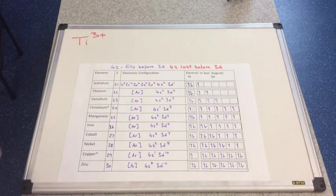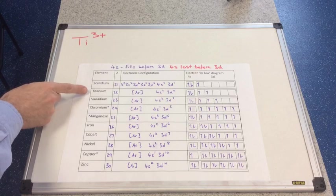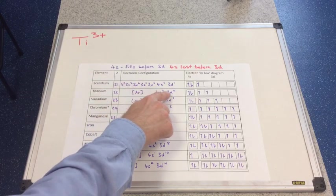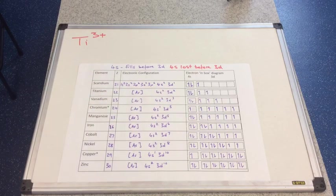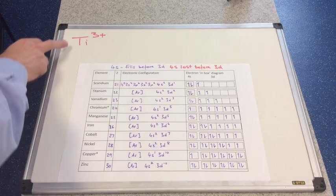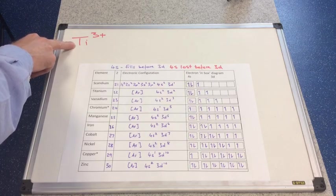So we'll have a look at a few examples now then. So the first one I've written on the board there is the titanium 3+ ion. So there's titanium, the atom. And it's got an argon 4s2, 3d2 configuration. So if it forms a 3+ ion, then it needs to lose 3 electrons.